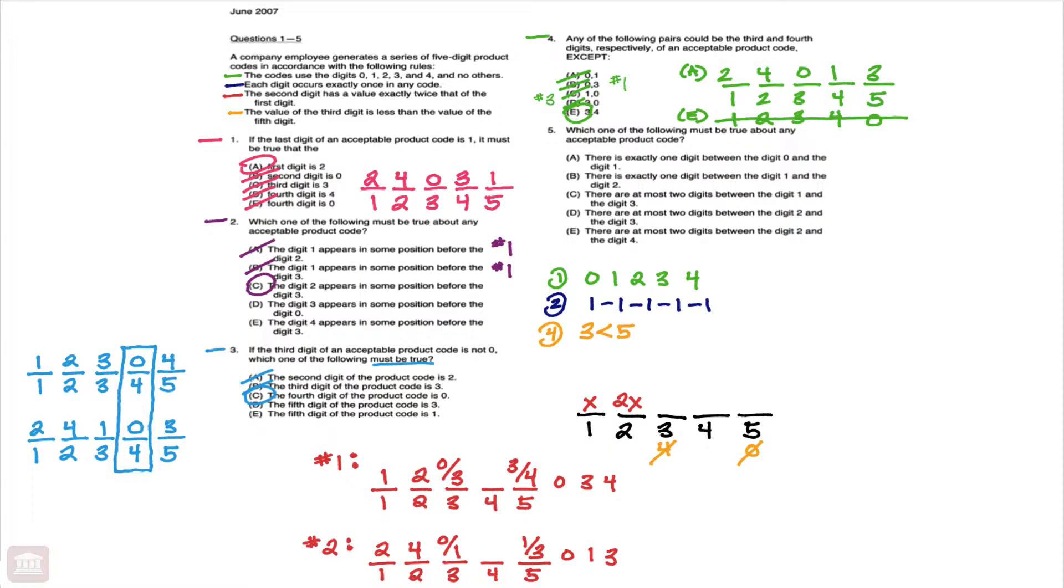And then turning our attention to the fifth and final question of the first game, which one of the following must be true about any acceptable product code? All right, so we're looking again for what must be true.